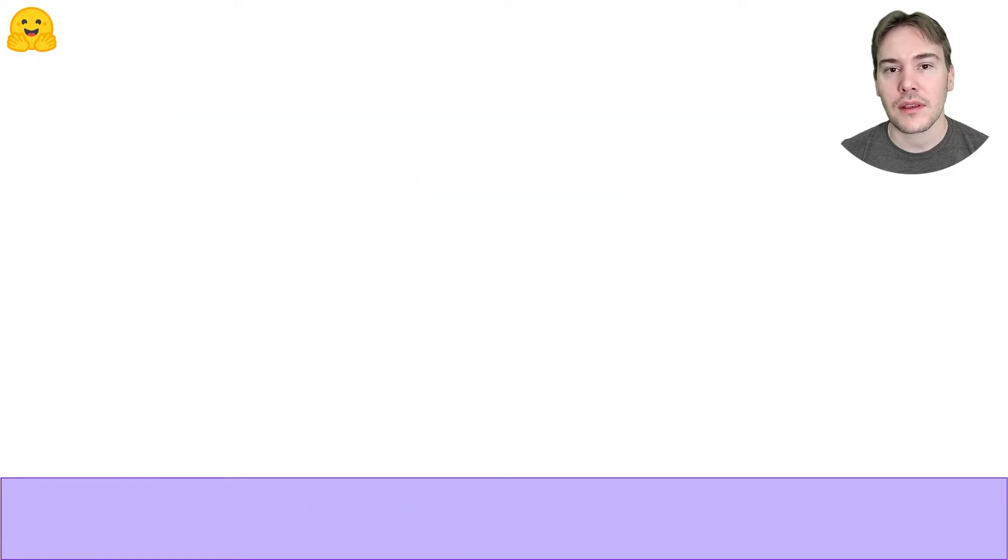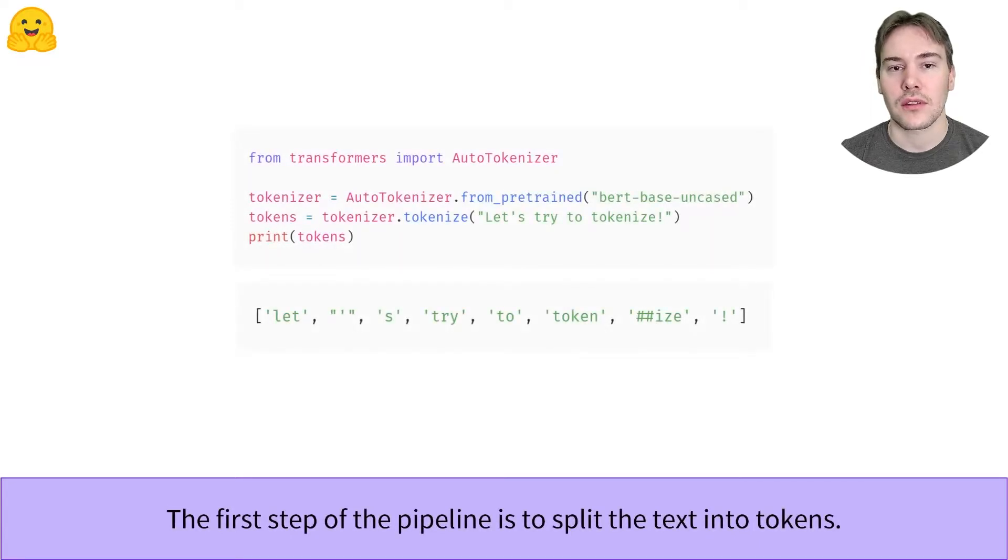The first step is to split our input text into tokens. We use the tokenize method for this. To do that, the tokenizer may first perform some operations, like lowercasing all words, then follow a set of rules to split the result in small chunks of text. Most of the transformer models use a subword tokenization algorithm, which means that one given word can be split in several tokens, like tokenize here. Look at the tokenization algorithms video linked below for more information.